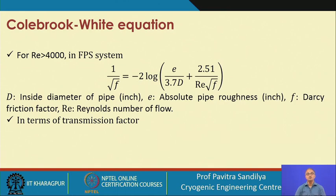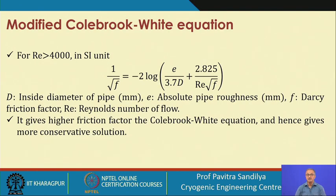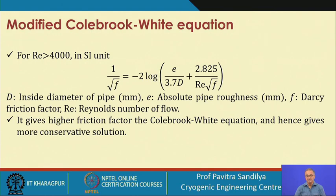We need to use some kind of numerical technique to find out the value of the friction factor — for example, the Newton-Raphson method. Similarly, the same equation can be given in terms of SI units, in which case we have to use the appropriate units for the roughness factor and the diameter of the pipeline. This gives us the expression for the friction factor again in an implicit manner.